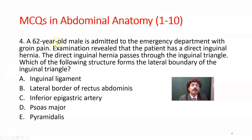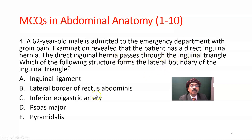Question number four: A 62-year-old male was admitted to the emergency department with groin pain. Examination revealed a direct inguinal hernia that passes through the inguinal triangle. Which of the following structures forms the lateral boundary of the inguinal triangle? Options: inguinal ligament, lateral border of rectus abdominis muscle, inferior epigastric artery, psoas major muscle, or vastus medialis muscle.